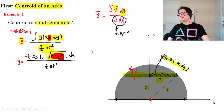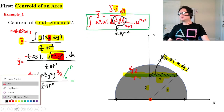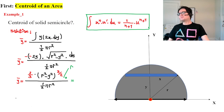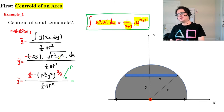To integrate this cleanly, recall the integration formula: the integral of u to the power of n times u-prime du equals 1 over (n+1) times u to the power of (n+1). We need to create a u-prime term in our equation, which we almost already have.